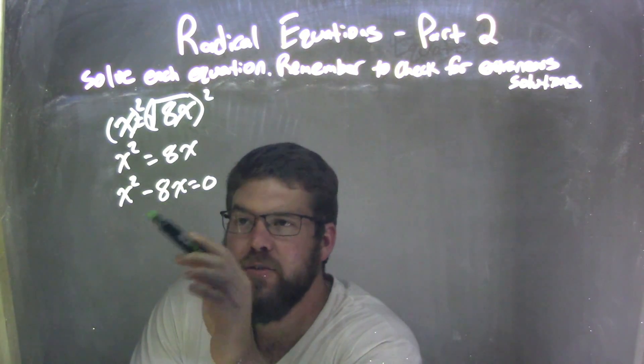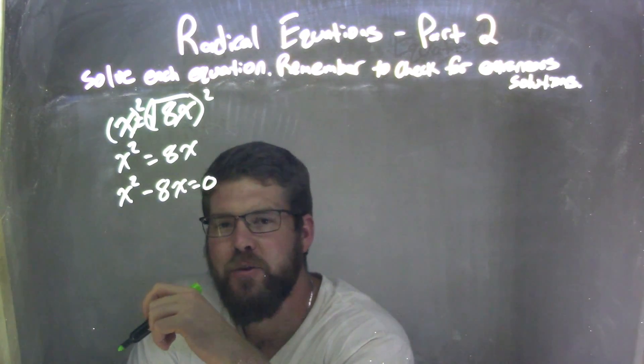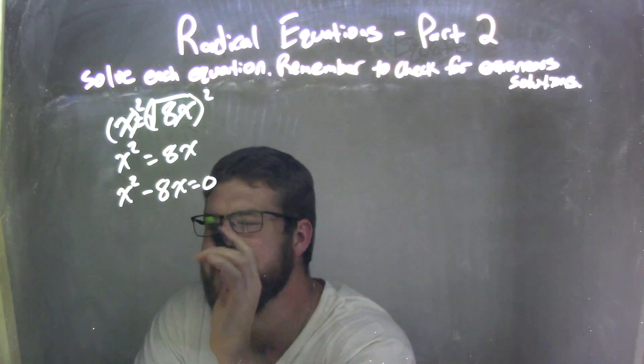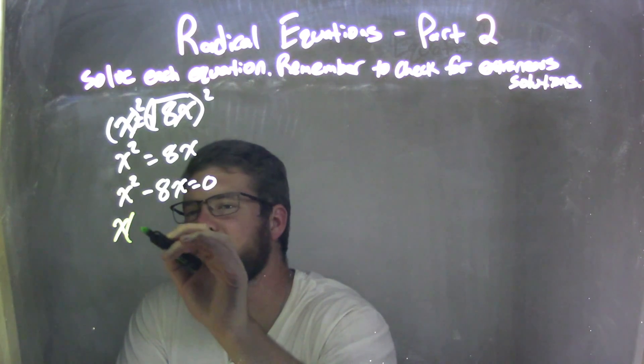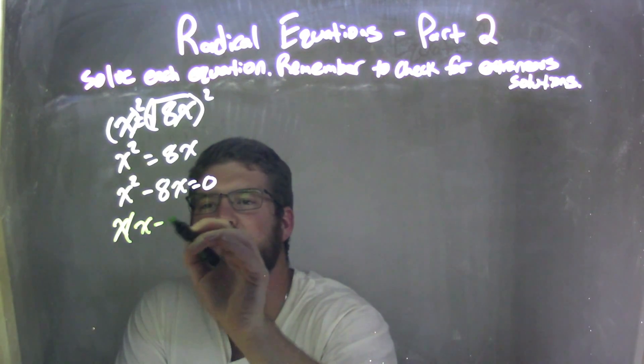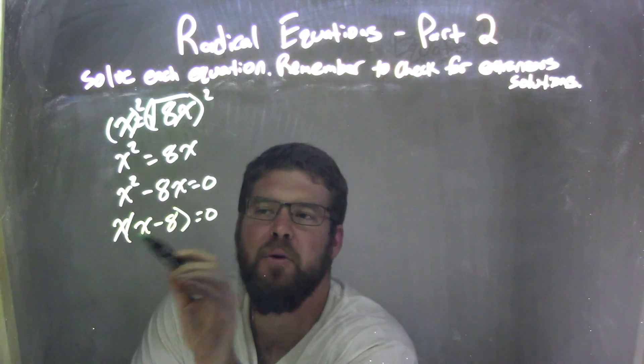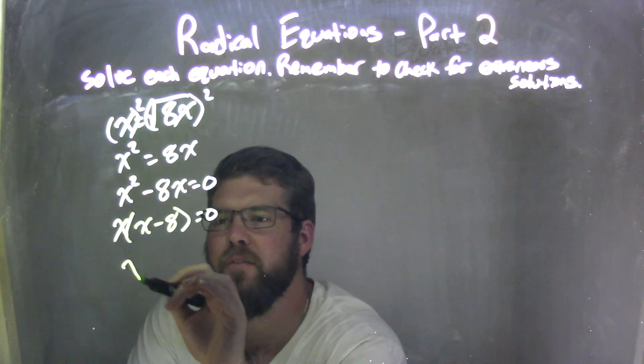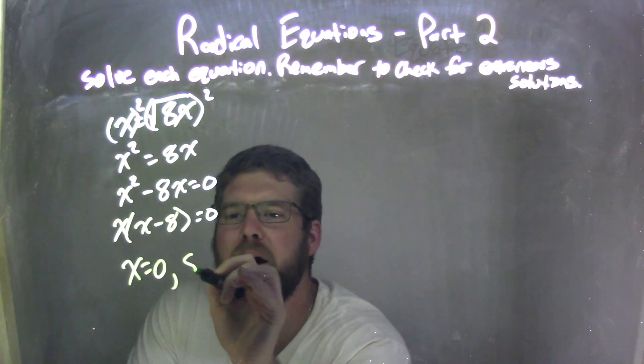So if x squared minus 8x equals 0, now I need to factor that, and this one's actually pretty easy. All I have to do is pull out an x. So I have x times x minus 8 equals 0. Now I set both parts equal to 0, so I have x equals 0 and a positive 8.